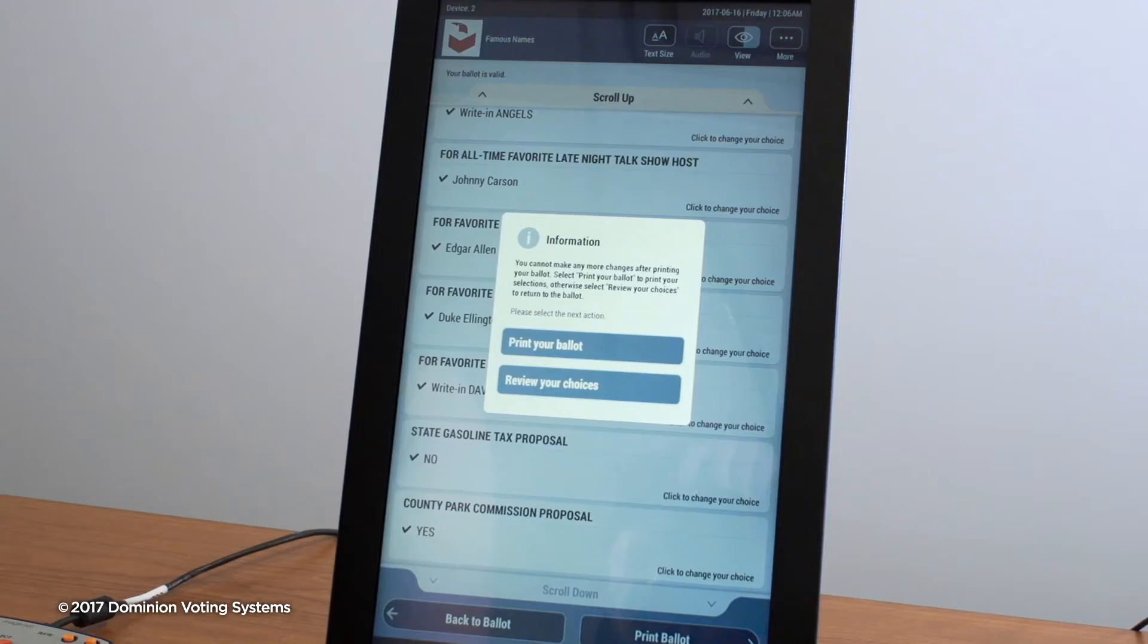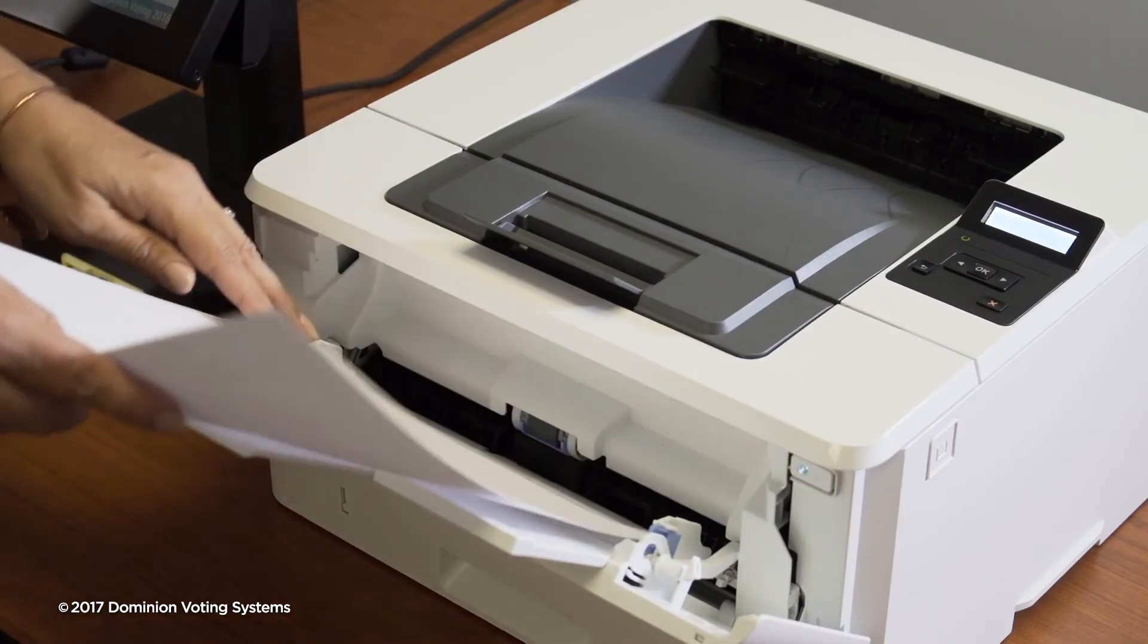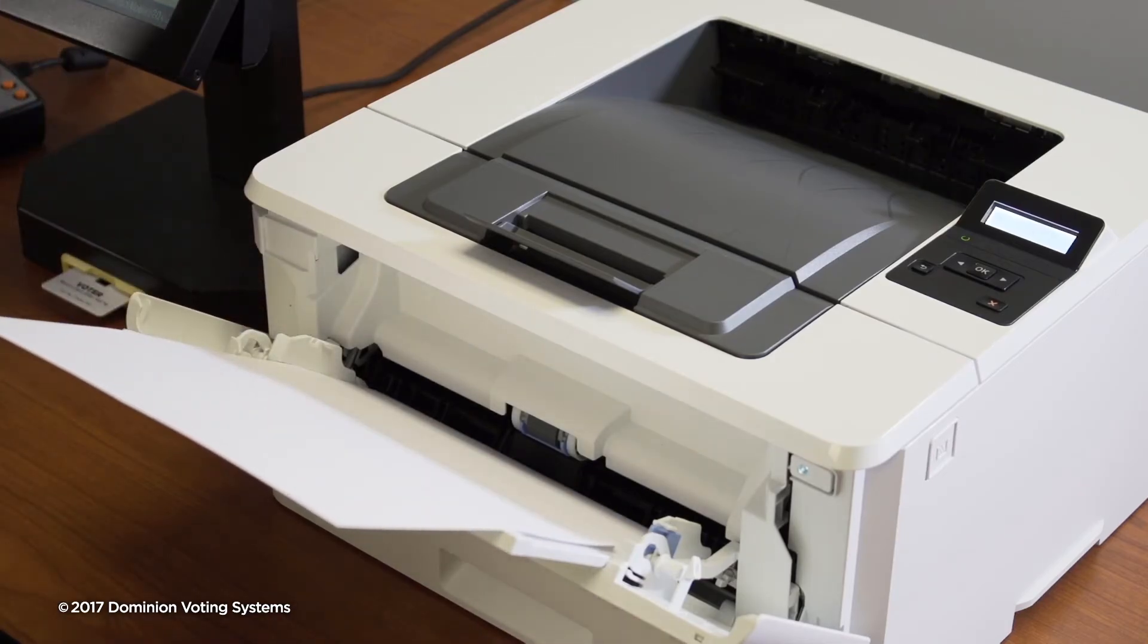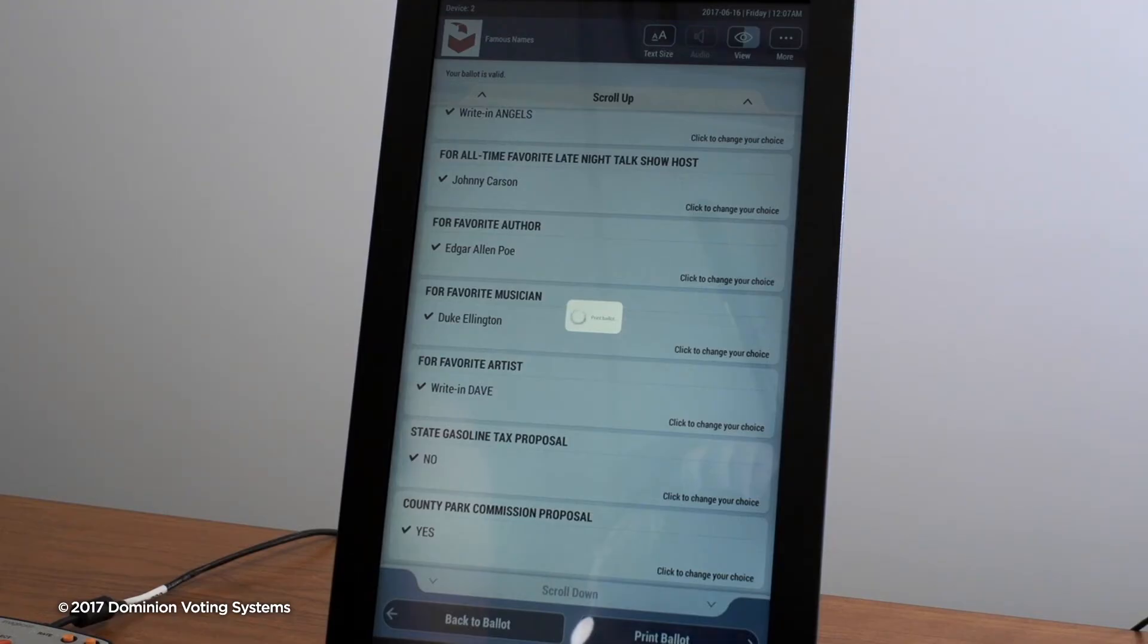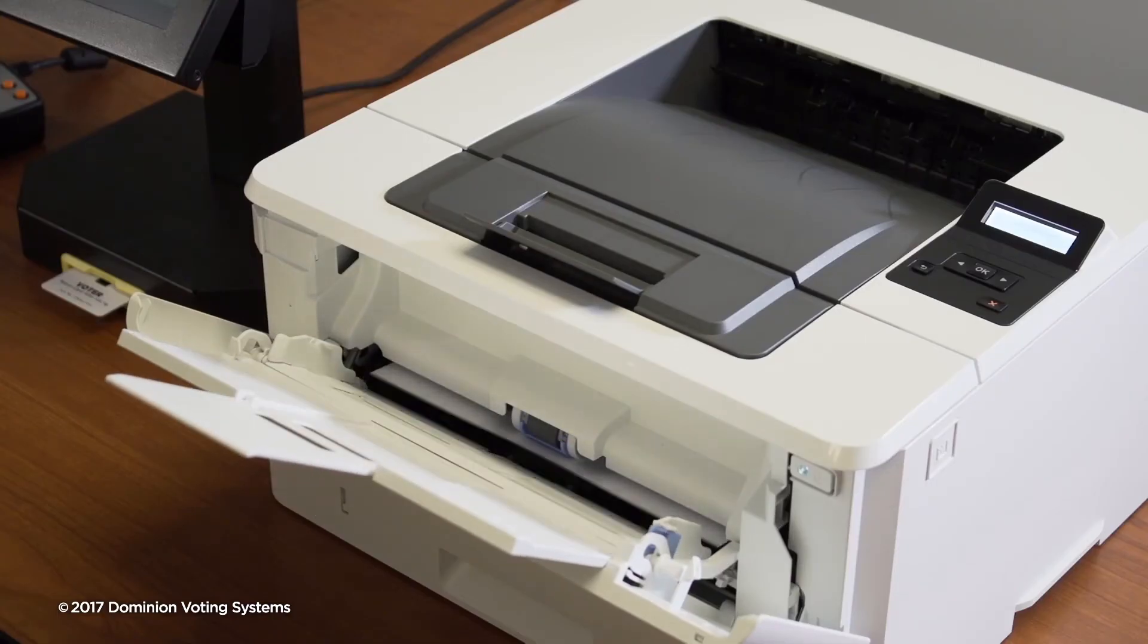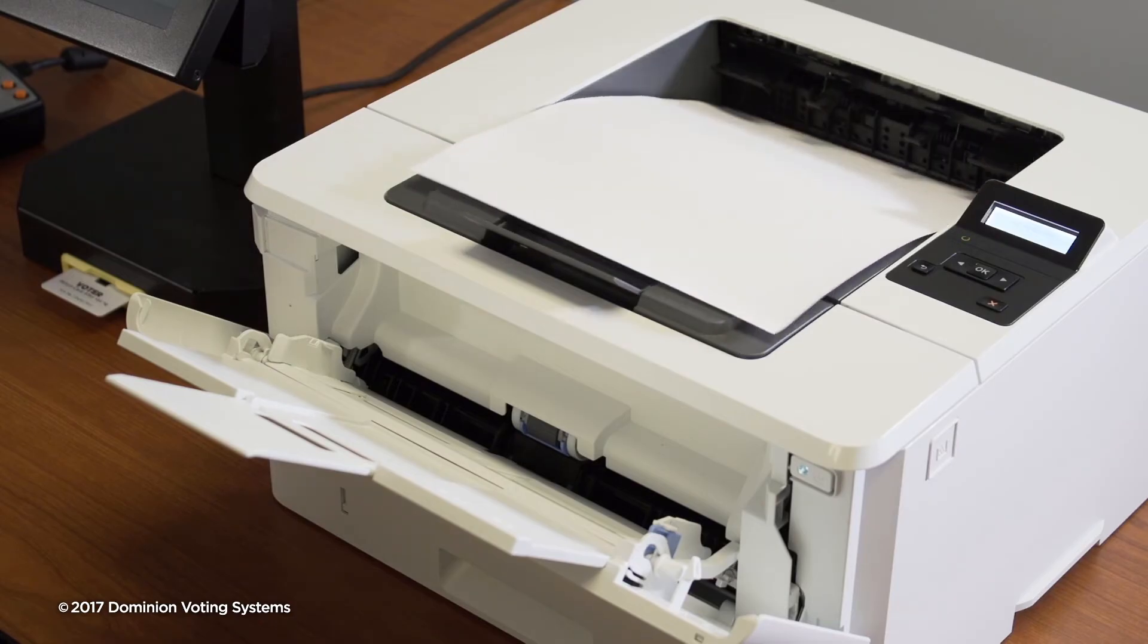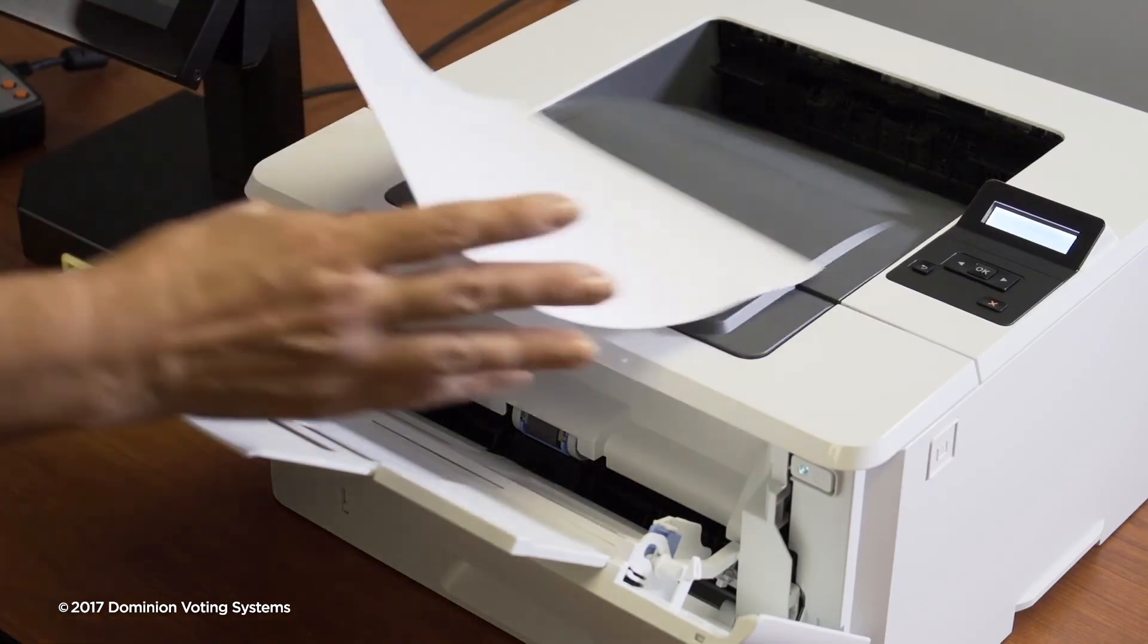When all choices have been made and the voter is ready to print the ballot, the blank ballot paper is placed into the printer. Select Print Your Ballot on the accessible device or in the ICX screen. The voted ballot will print automatically. Remove the voted ballot.